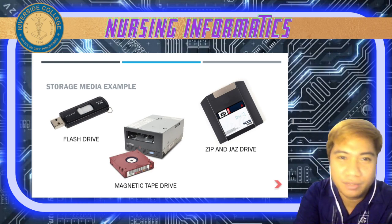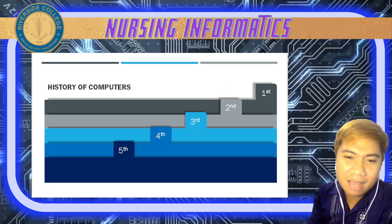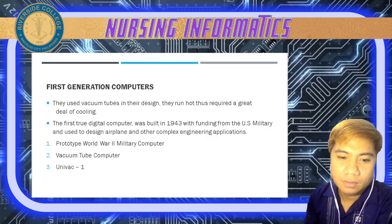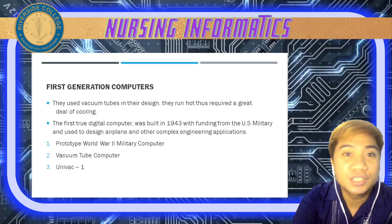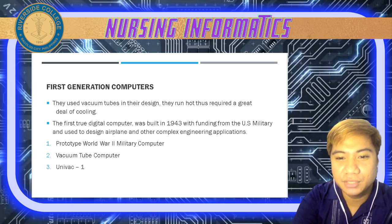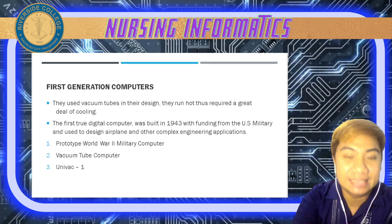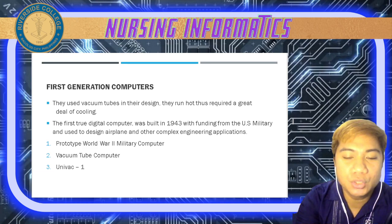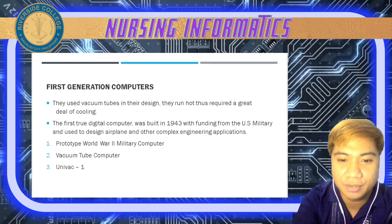Now let's talk about the history of computers. The first computers are considered first generation computers — they used vacuum tubes in their design and ran hot, thus requiring a great deal of cooling. The first true digital computer was built in 1943 with funding from the US military and was used to design airplanes and other complex engineering applications.